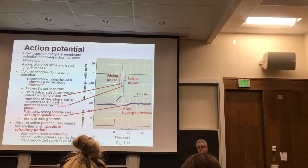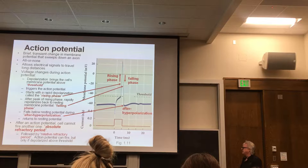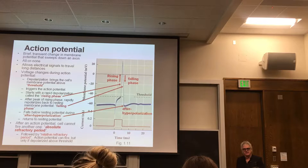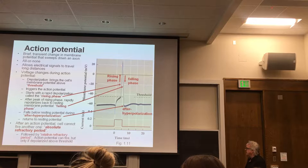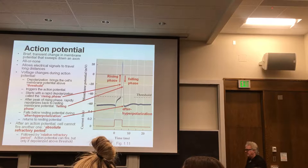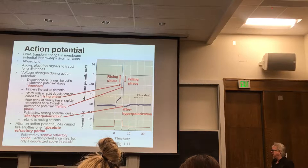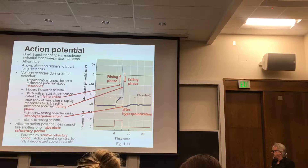Once the action potential rises, it comes back down again quite quickly. One reason it comes back down is that the sodium channels, once they've opened, become inactivated — the channel gets blocked, no more sodium can flow in, stopping the rising phase. At the same time, we need to bring the membrane potential back down to rest so another action potential can be generated if necessary. This falling phase is not due solely to sodium channel inactivation; we also need to invoke potassium channels to help bring the membrane potential back down.